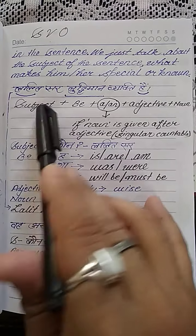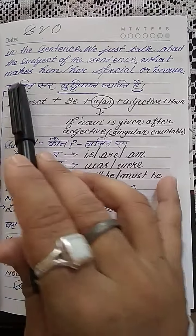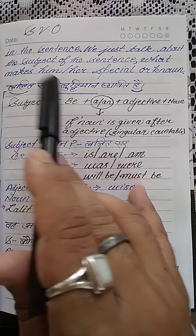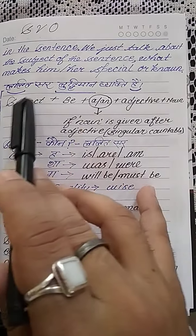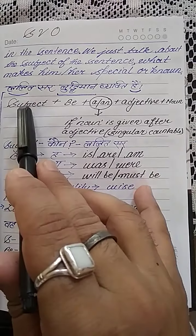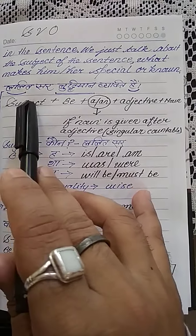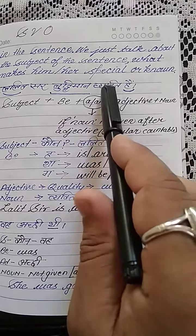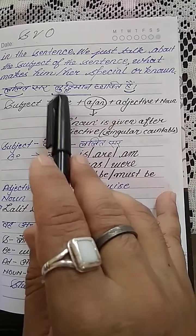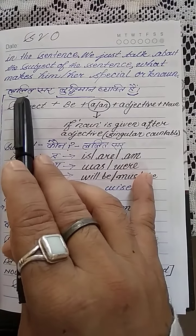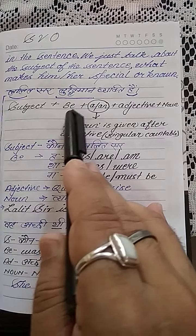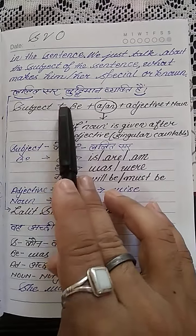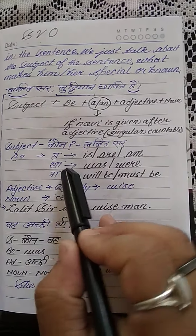Look at the rules to compose the sentence. First, we will use the subject — subject means about whom we are talking, or with the help of whom we come to know about the topic. In earlier videos I have taught you how to recognize the subject. You can use 'kaun' or 'kisne' — 'kaun buddhimaan hai?' — the answer you get is Lalitsar, so Lalitsar is the subject. Just after the subject we will use 'b' — there is a rule for 'b.' Look at these three things.